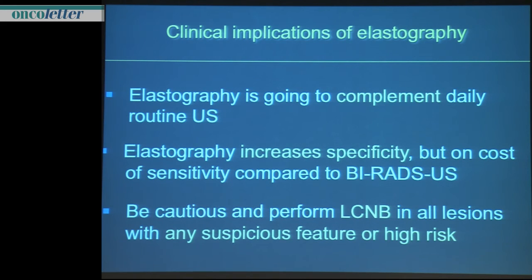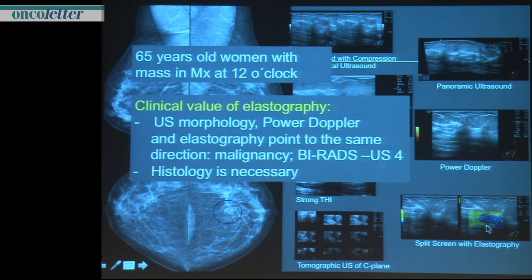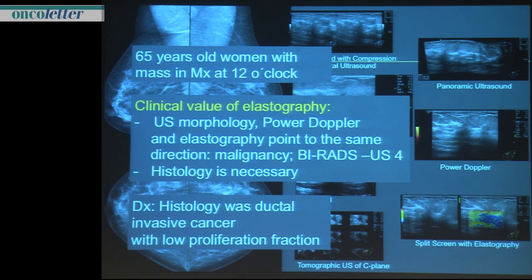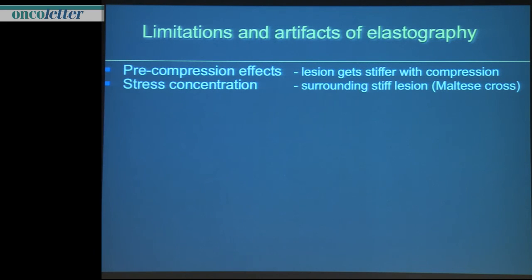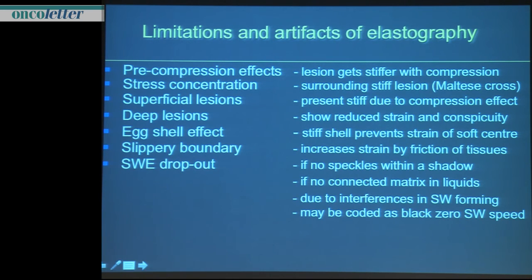You should be cautious and perform a core needle biopsy in all lesions with any suspicious features in high-risk patients. Here we have another lesion, quite sharply demarcated — the B-mode is very suspicious and it's hard. So you're not really surprised that this lesion turned out to be a ductal invasive cancer with a low proliferation fraction. One thing that limits the value of elastography is known artifacts — I want to state the pre-compression effect: the lesion gets stiffer with compression due to stress concentration around the surface.